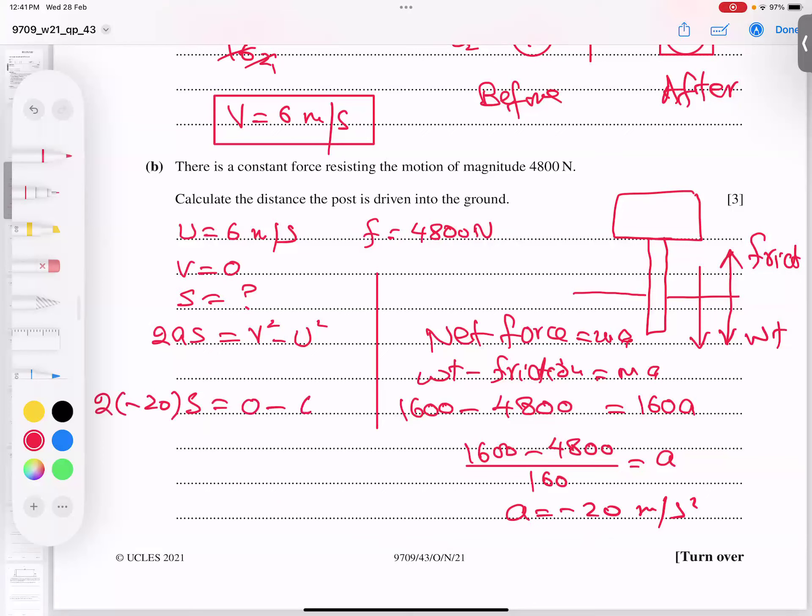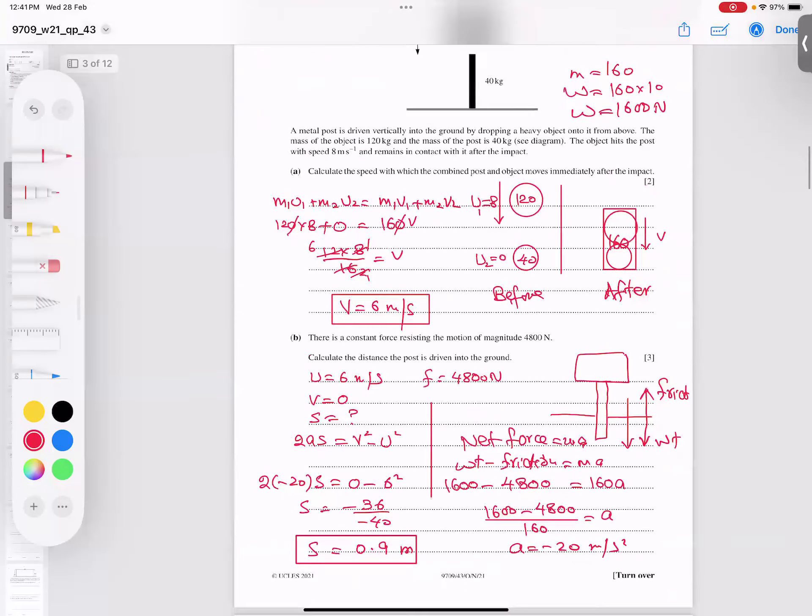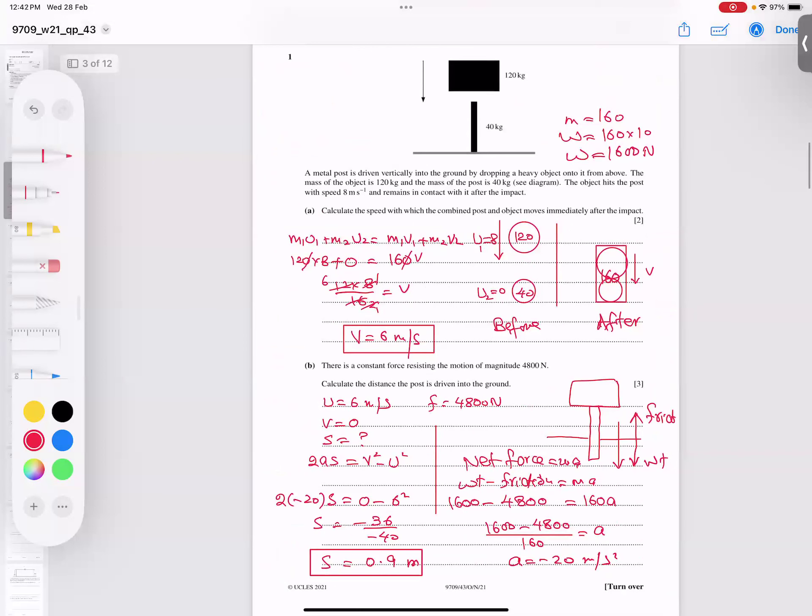I believe now you got the whole idea how we can get this answer. Ultimate V is 0, this is 6 squared, so minus 36 divided by minus 40. This minus 40 comes from here. If I type in calculator, it's giving us 0.9 meters. The concept is very clear of the whole question. The question is over.